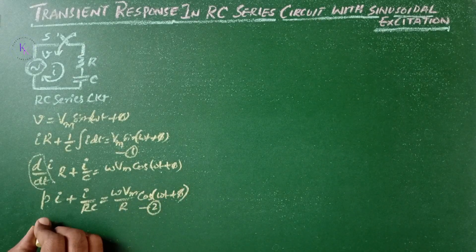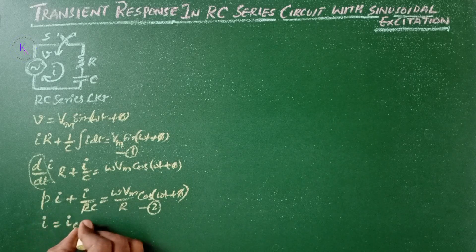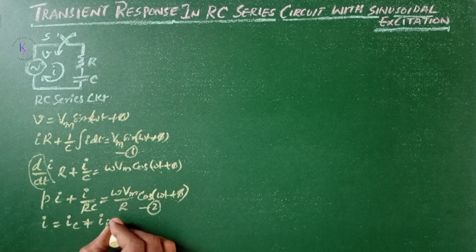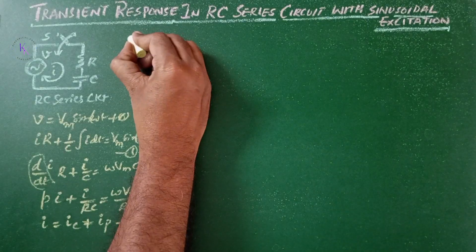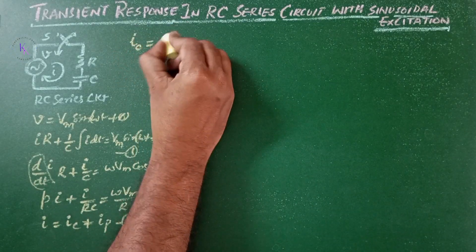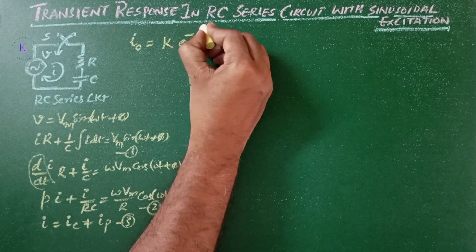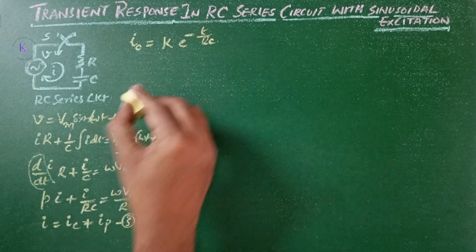The current I is given by the complementary function IC plus the particular solution IP — let this be equation number 3. Where the complementary function IC equals constant K multiplied by e to the power of minus t/RC.